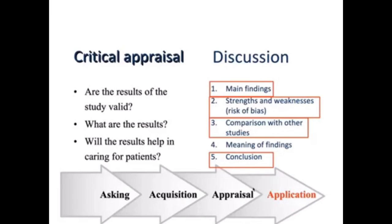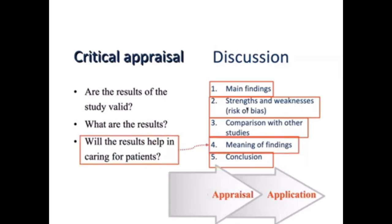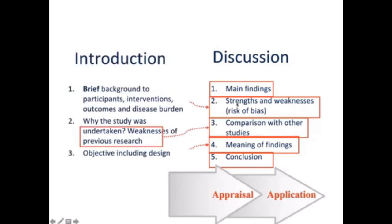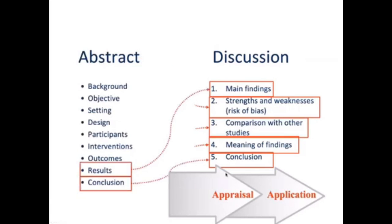With this background, I have highlighted how you can write the main findings, conclusion, comparison with other studies, and strengths and weaknesses using information you already have. The final section is the meaning or interpretation of the findings, which tells you whether the findings are useful for patients. You should re-emphasize the strength of your paper and the comparison of your findings, and with that you have all five paragraphs written for your discussion section.